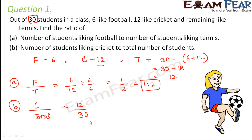Again, this is also not in its simplest form. So let's find out the HCF. So factors for 12 are 1, 2, 3, 4, 6 and 12. Factors for 30 are 1, 2, 3, 5, 6, 10, 30.